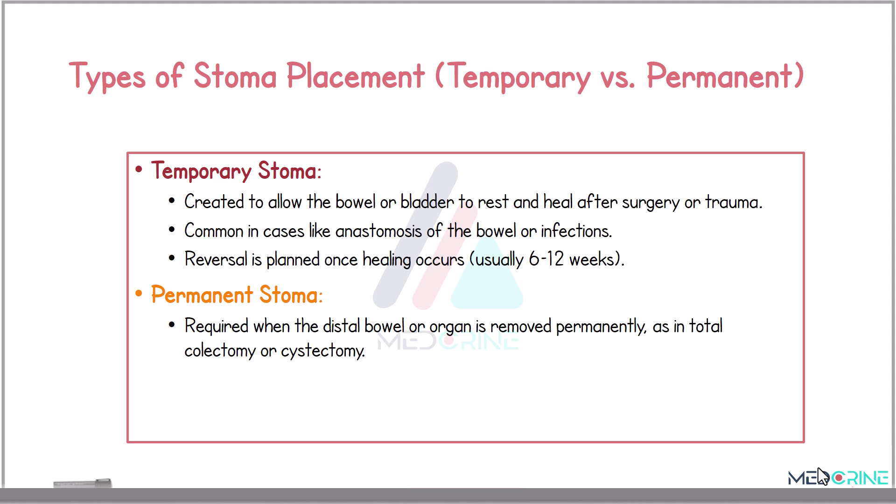Stomas can also be classified as either temporary or permanent. Temporary stomas are created to allow the bowel or bladder to rest and heal after surgery or trauma. They are common in cases like bowel anastomosis or infections, and are reversed once healing occurs, usually between 6 to 12 weeks. A permanent stoma is required when the distal bowel or organ is removed permanently — for example, in total colectomy and cystectomy.